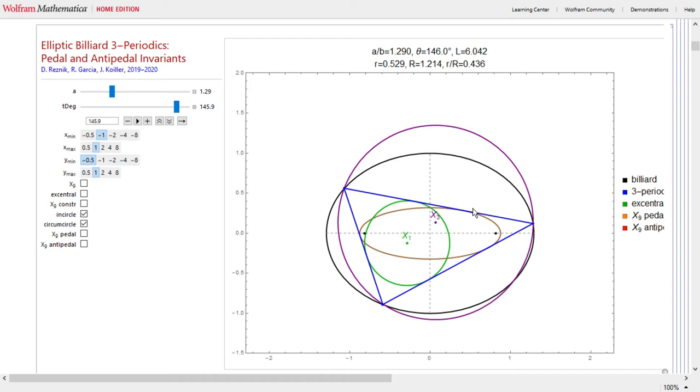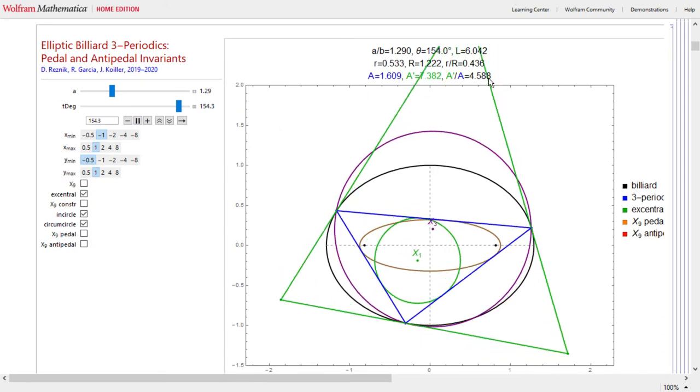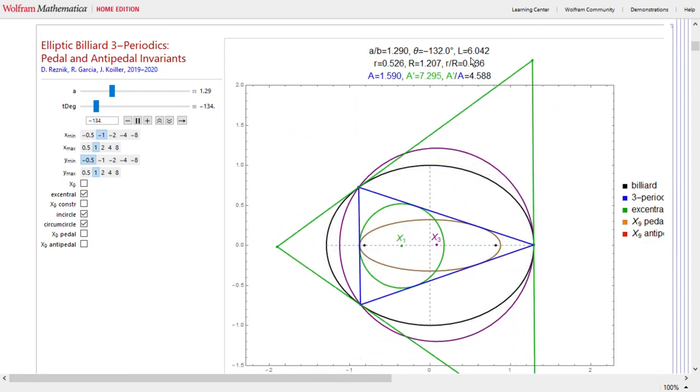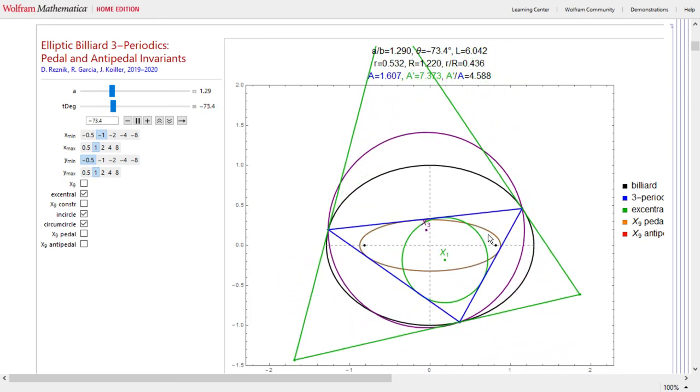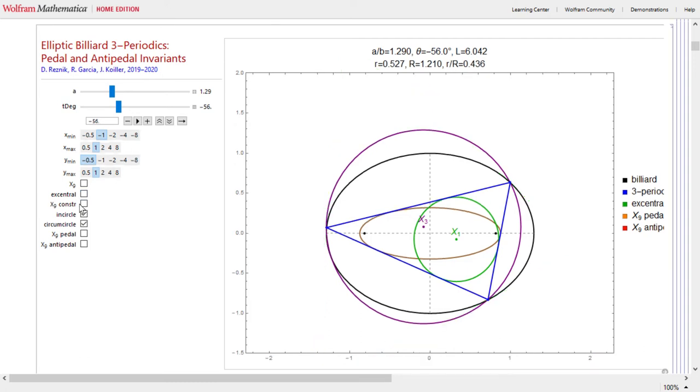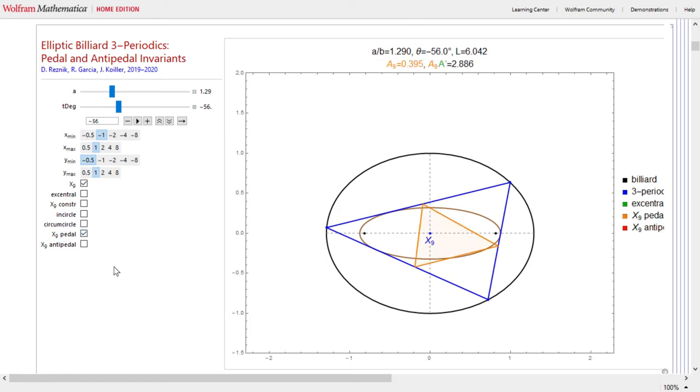Okay, so here I'm going to be talking about another manifestation. We've seen area ratios be invariant, we've seen little r by big R being invariant, we've also seen classic invariances as perimeter invariance and tangency invariance. Let's talk about two new ones that we just recently discovered, in fact a couple of days ago.